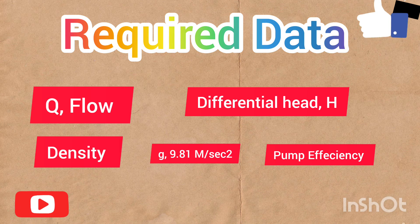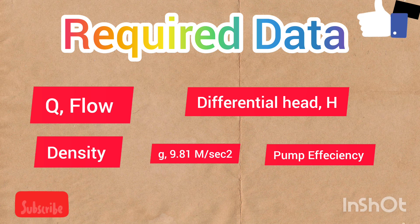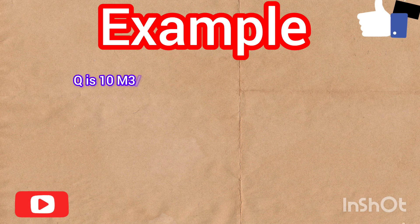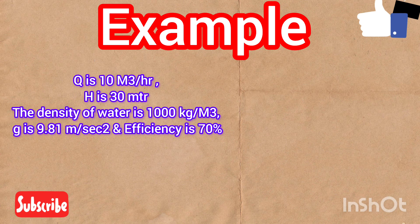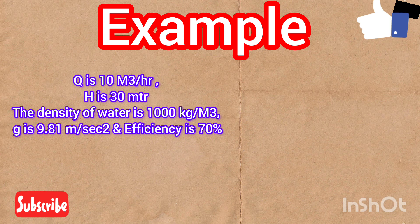Let's start with an example. Assume Q is equal to 10 meter cube per hour and differential head is 30 meters. The density of water is 1000 kg per meter cube and we assume pump efficiency is 0.7. If you don't have the pump efficiency, you need to ask the pump vendor.